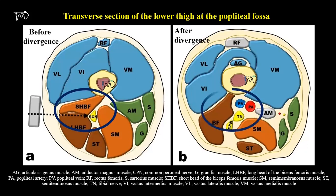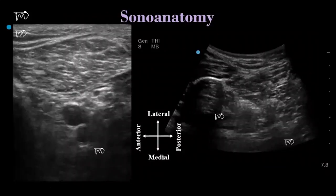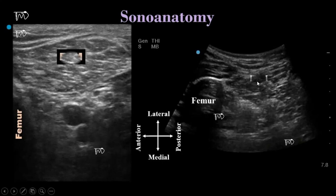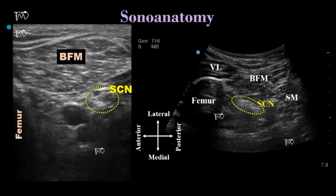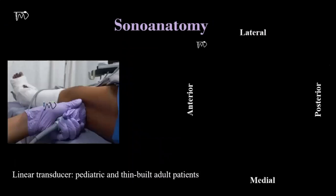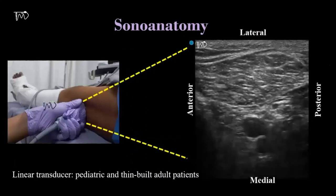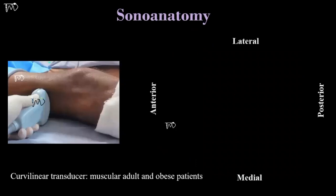We are catching the nerve at or above the point of divergence. This slide depicts the relevant sonoanatomy for CAPS block — the left image is with the linear probe and the right one is with the curvilinear probe. I usually choose a linear transducer for pediatric and thin-built adult patients, and a curvilinear probe for well-built muscular adult and obese patients.